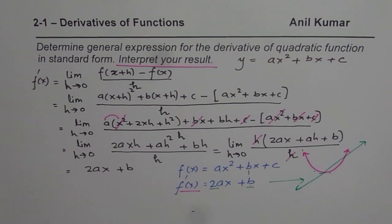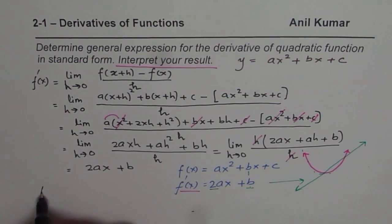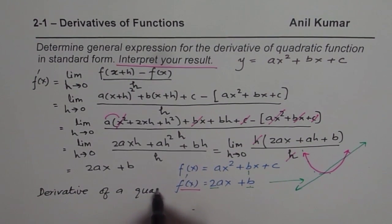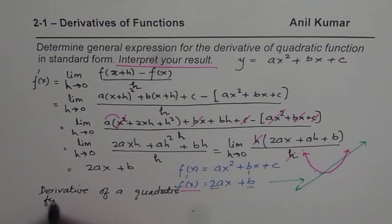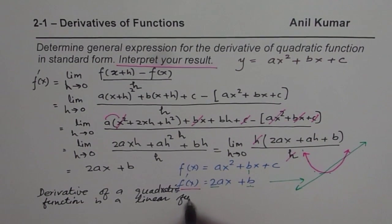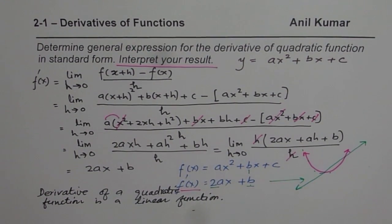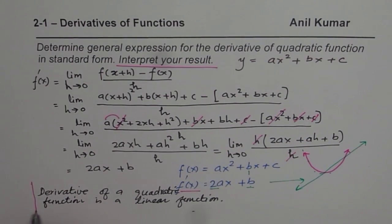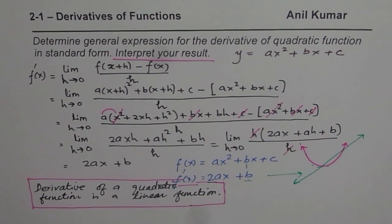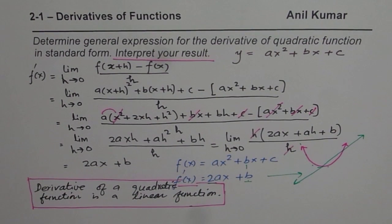So derivative of any quadratic function will be a linear function. Let me write it very clearly here. And that is to say that derivative of a quadratic function is a linear function. So this is very important to understand. In general, any quadratic function's derivative will be a linear function. I hope that's clear. Thank you and all the best.